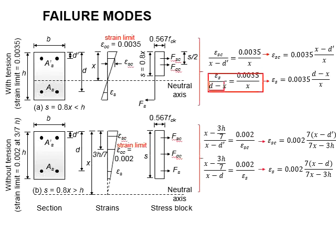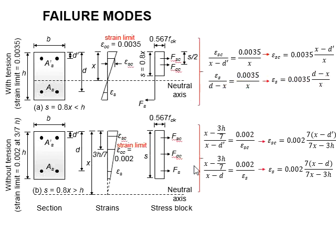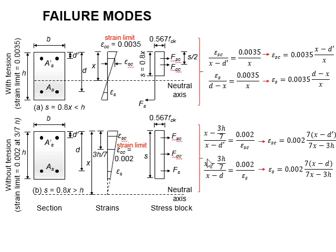Moving the base to the opposite side, you will get this. From these equations, you are able to determine the strength in the tension steel of the columns.